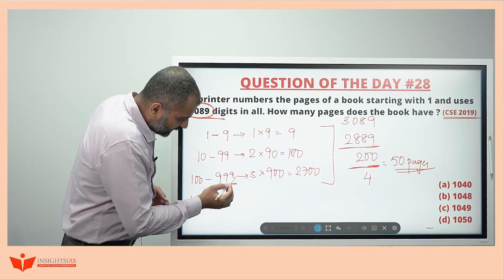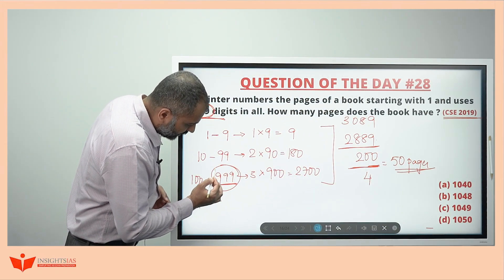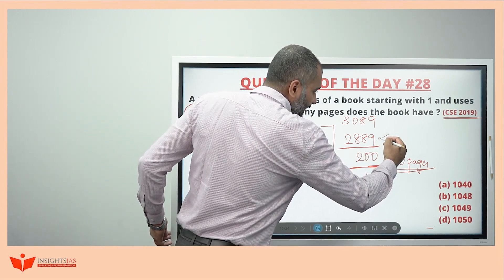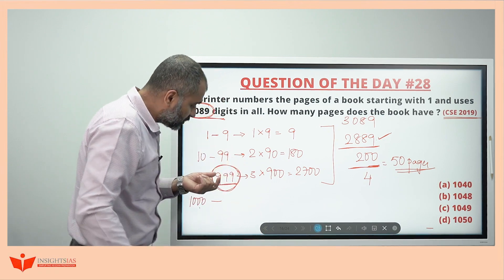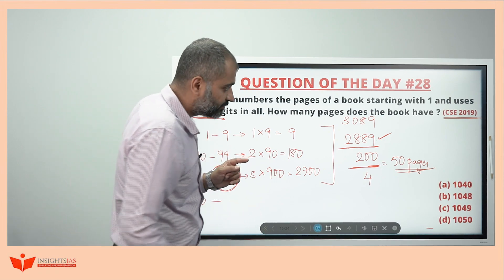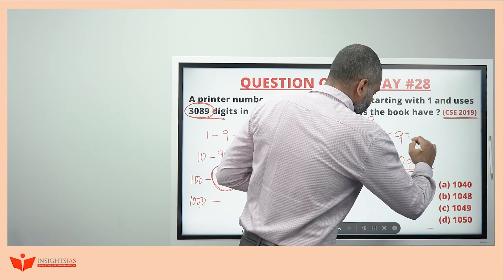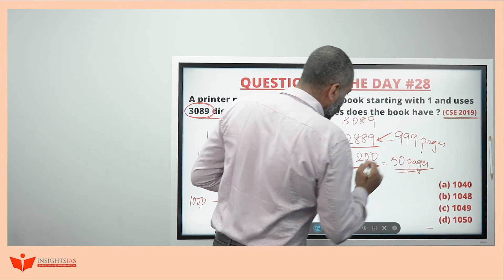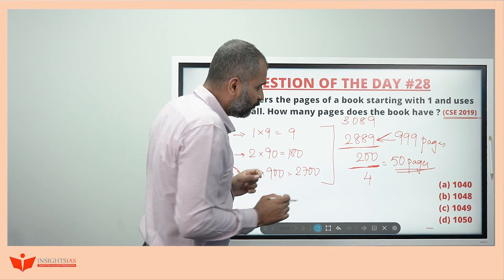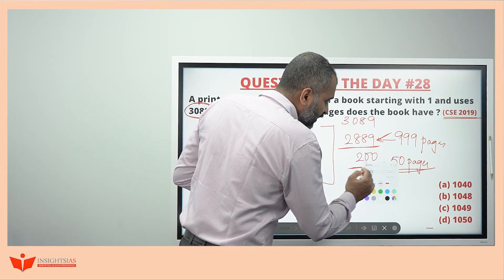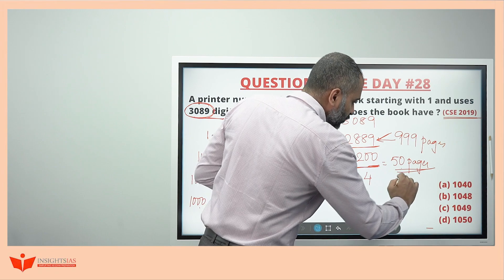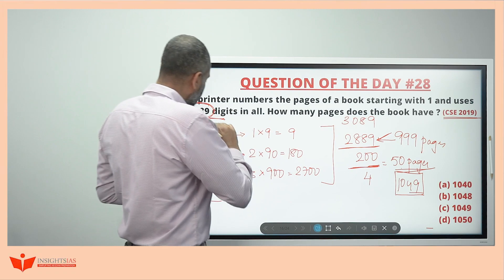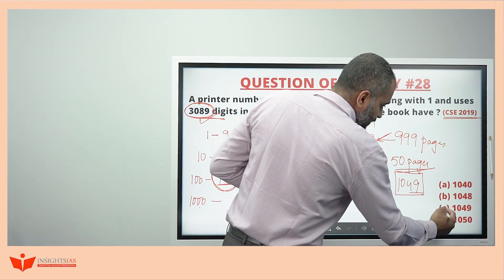Till here, 999 pages are printed and 2889 digits are printed. Do not get confused. So triple 9 pages and 2889 digits. For the next 200 digits, 50 pages can be printed. So totally 1049 pages for 3089 digits.